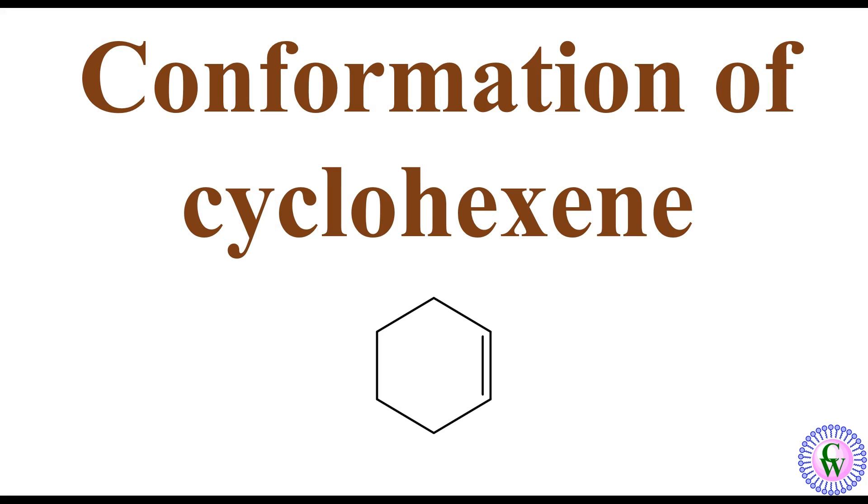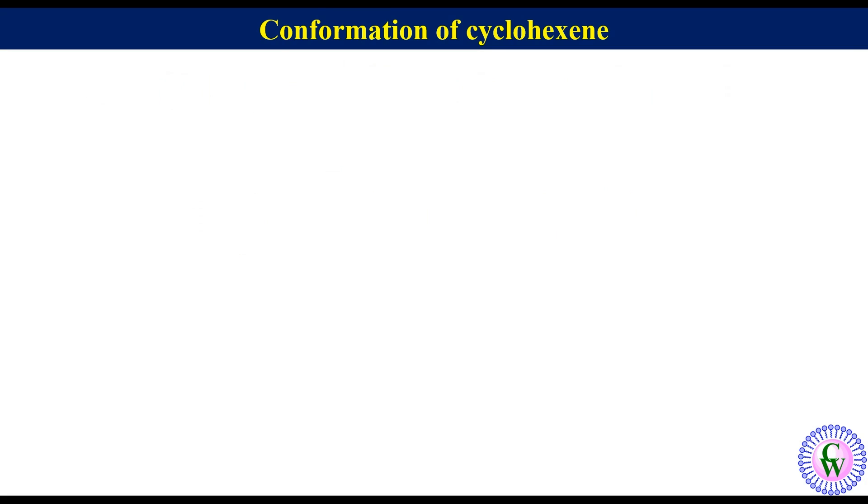Hello and welcome to my YouTube channel ChemViz. In this video, we are going to discuss the conformation of cyclohexene. The planar structure of cyclohexene can be drawn like this. For better understanding, label ring carbon atoms as 1, 2, 3, 4, 5, and 6.